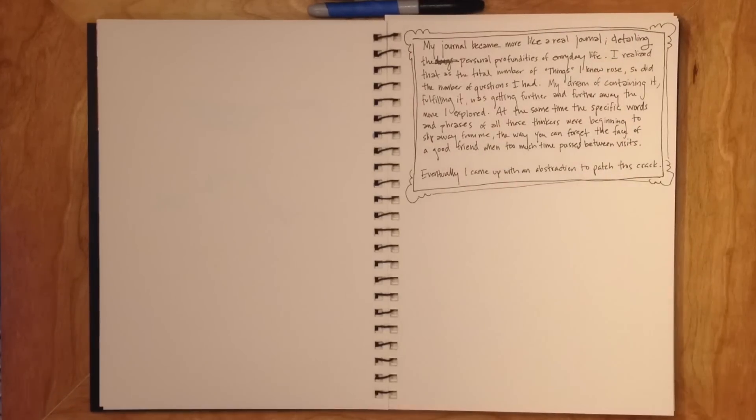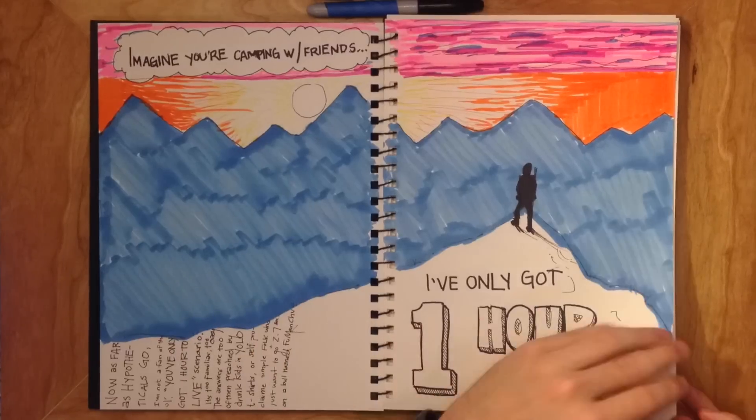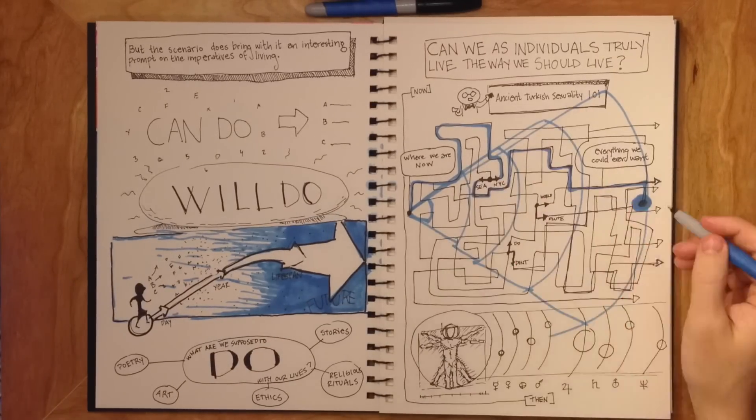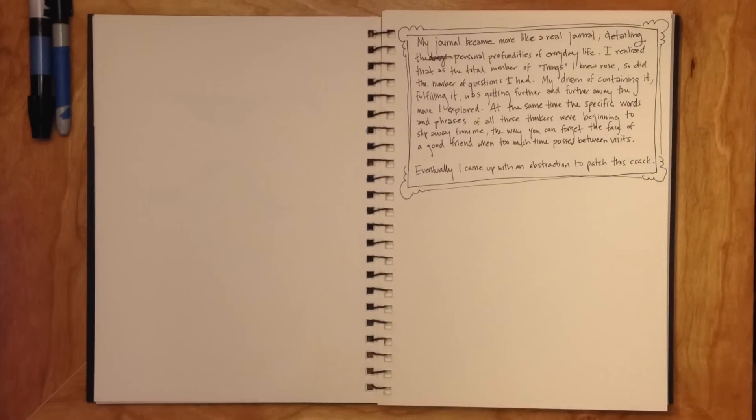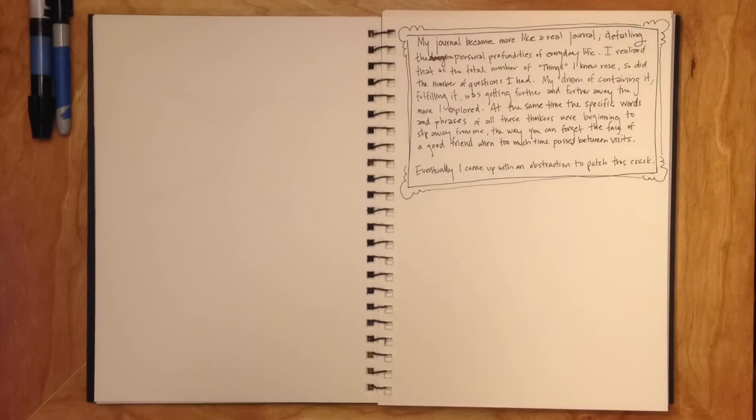Eventually, I came up with one abstraction to patch this crack. If we return to that original anecdote on the mountaintop and the visualization of traveling along the string of choices, we can notice a kind of cliché understanding of life's path.